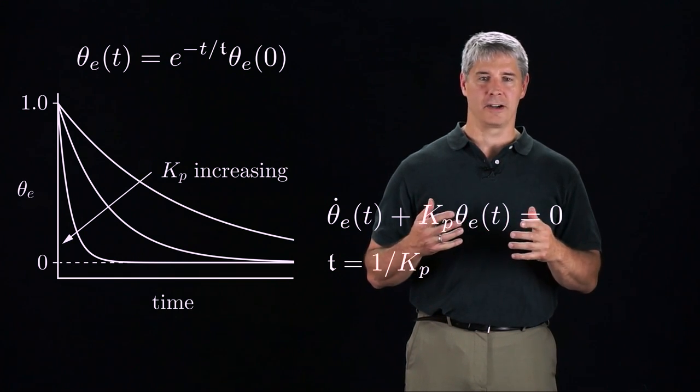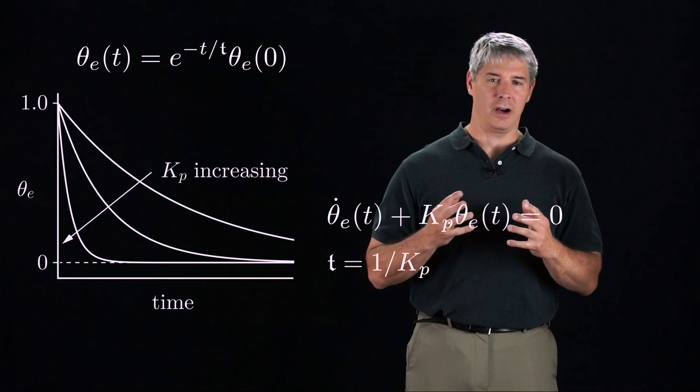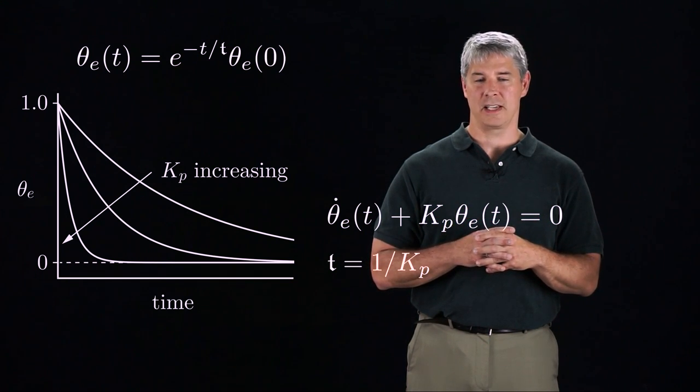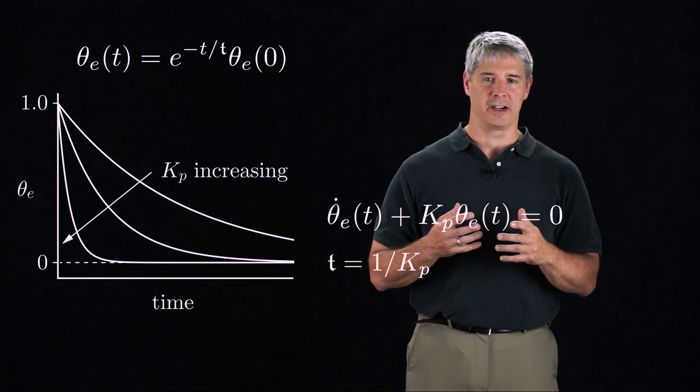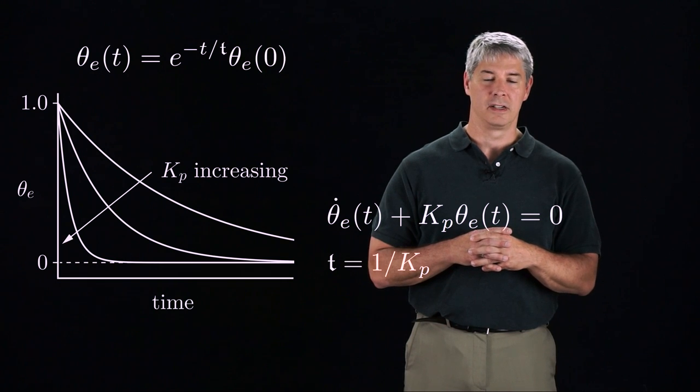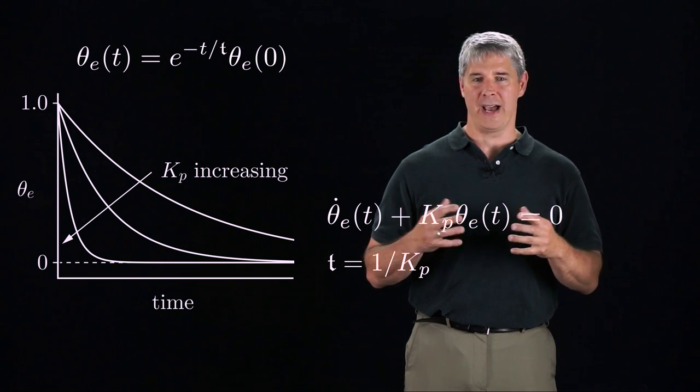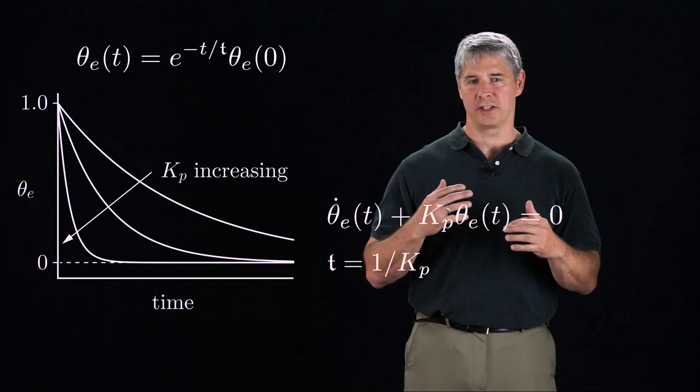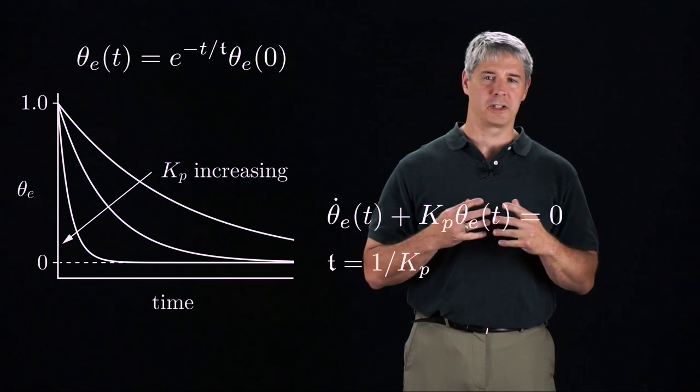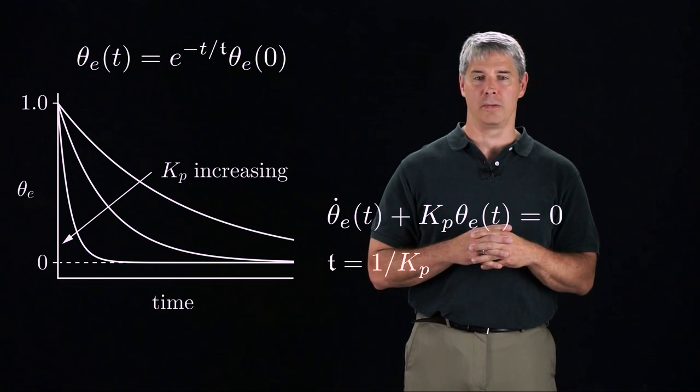In practice, there are limits on how large we can choose kp. With a large kp, the joint might have excessive vibration as small position errors produce large velocities. Also, actuators have limited maximum velocity, and if the control law is often hitting these limits, then the response of the controller is no longer well modeled by our simple linear differential equation.